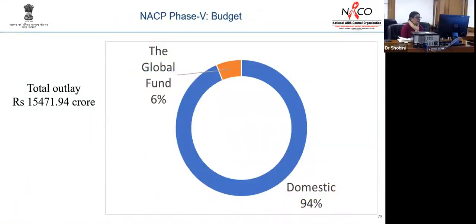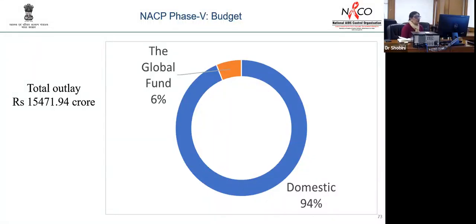Despite COVID, NACP-5 has an overall outlay of INR 15,471 crores — roughly translating to $1.9 billion US dollars — provisioned as an all-time high allocated domestically. The Global Fund contributes 6% of the overall budget, with 94% being domestically supported. Support from PEPFAR and other partners is extra-budget, outside of this allocation.